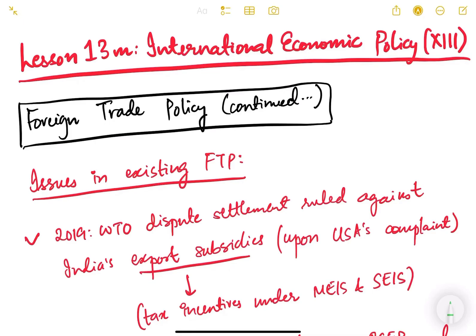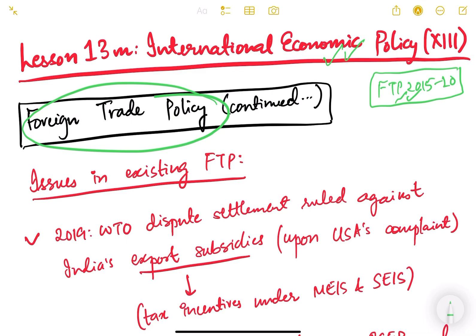Let us continue with International Economic Policy. In this video we are going to continue about the Foreign Trade Policy of India. In the previous video we started about the Foreign Trade Policy 2015-20, which is currently in force in our country. It may change very soon, so you have to keep a tap on current affairs. In this video we are going to look at the issues — the drawbacks and shortcomings in this policy — and based on this, what we can expect in the upcoming new policy.